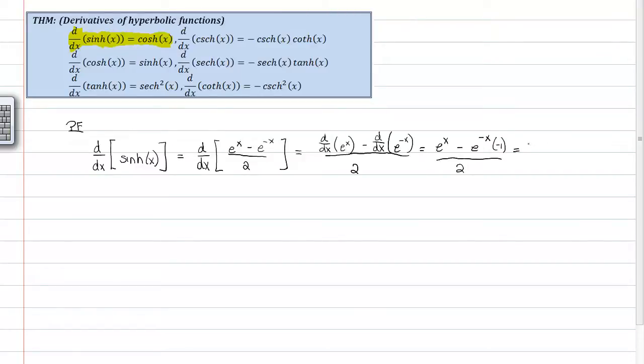And now this simplifies down to e to the x plus e to the negative x all over 2. And as you know, that, my friends, is the hyperbolic cosine.